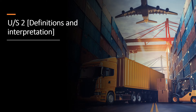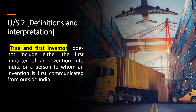Under Section 2, Definition and Interpretation, it has been explained that True and First Inventor does not include either the first importer of an invention into India or a person to whom an invention is first communicated from outside India. So this indicates that True and First Inventor is a person who has actually invented himself.